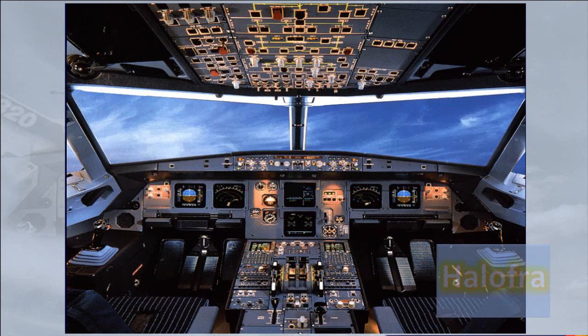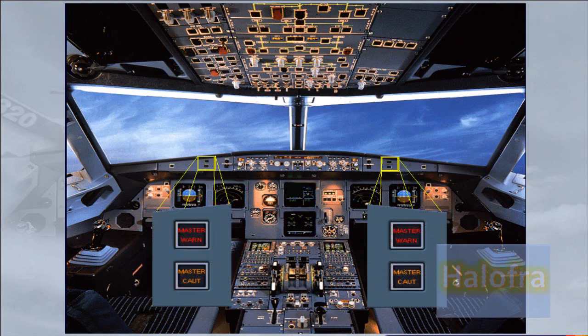In front of each pilot there are two attention-getters: a red master warning and an amber master caution. As a further means of getting the pilot's attention, there is a loudspeaker on each side of the cockpit for aural alerts and voice messages. Note: the loudspeakers can also be used to listen to ATC and the intercom.